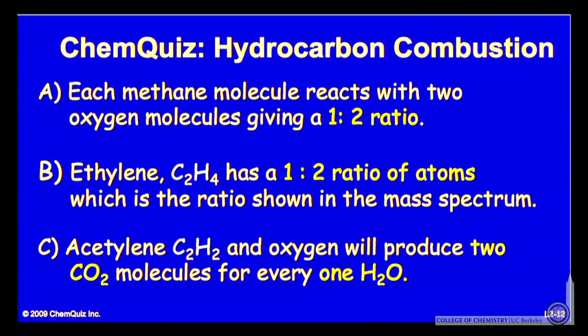Let's consider an explanation for each of the three options. Option A, each methane molecule reacts with two oxygen molecules, giving a 1 to 2 mass ratio in the mass spectrum. B, ethylene C2H4 has a 1 to 2 ratio of atoms, which is the ratio shown in the mass spectrum.